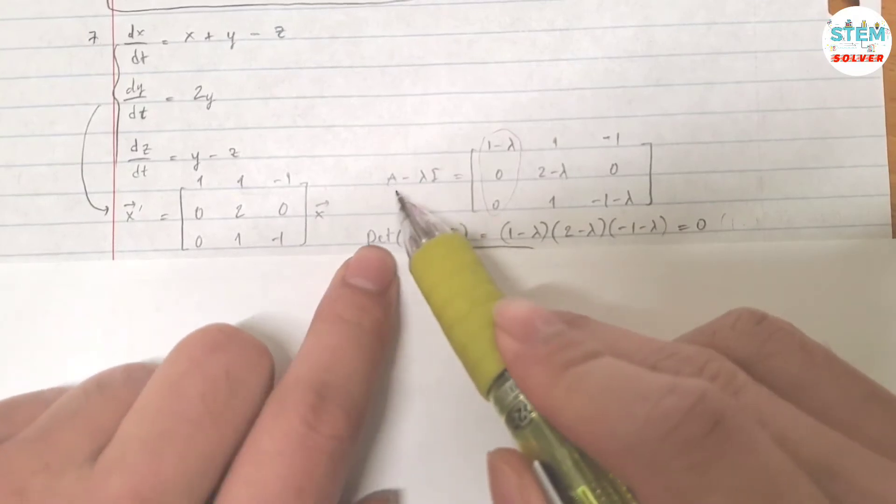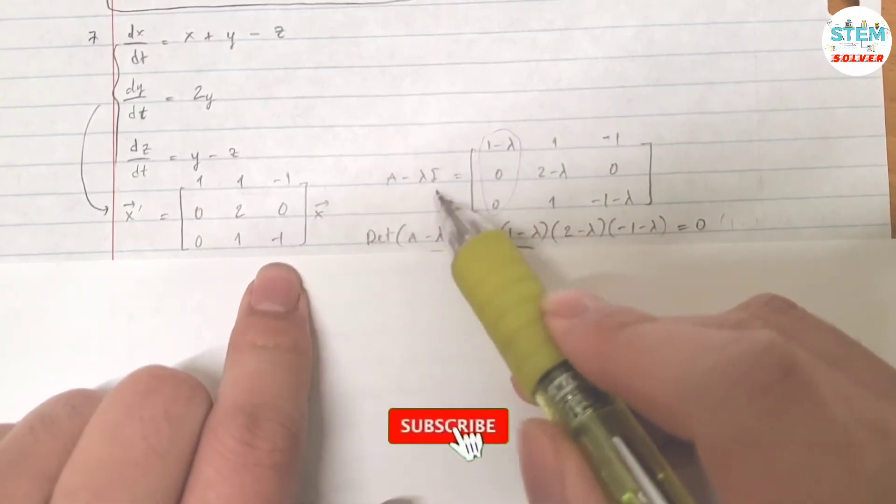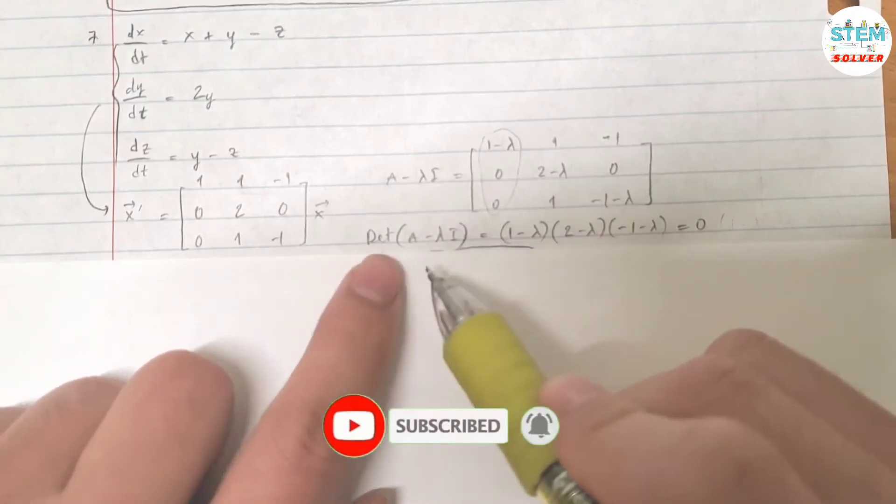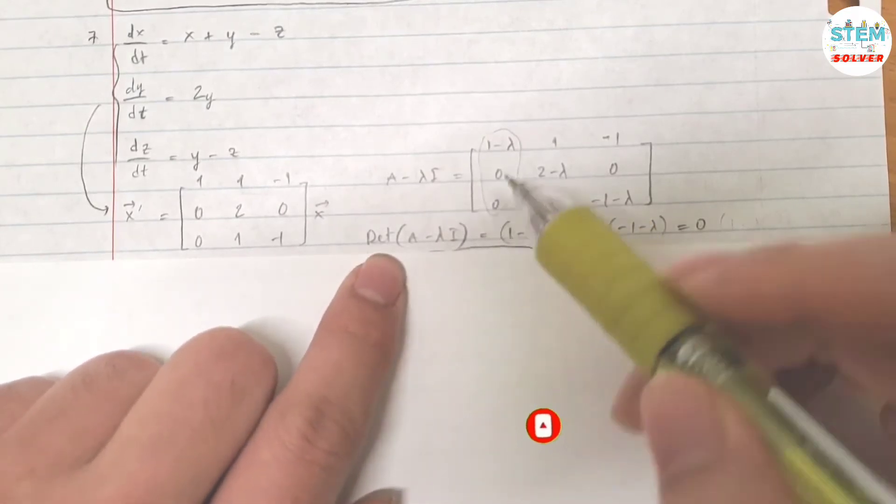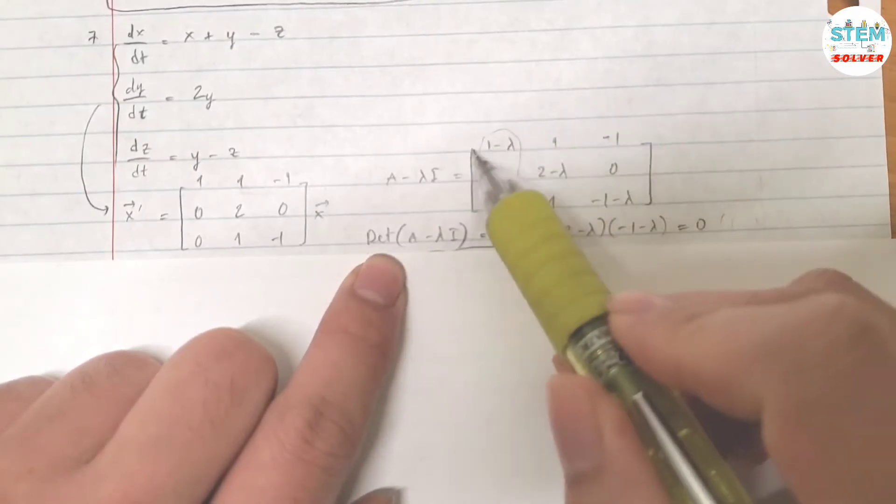Then you find A minus lambda I. Let's call this matrix A. Then subtract it with lambda I, that will give you this one. Then find the determinant of this, so I'm gonna go down the column instead of going across the row.